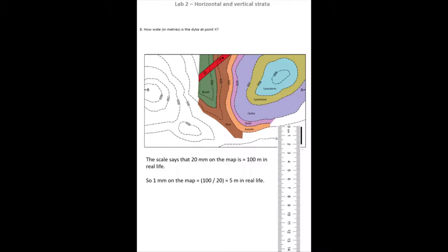Next question is asking how wide the dike is at point X. Well, in order to work that out, we need to work out what the scale of the map is. And in the bottom corner of the map, you can see that we've been given a scale bar. And when we take a ruler to that scale bar, we see that 100 meters represented by the scale bar is equal to 20 millimeters. So 20 millimeters on the map is equal to 100 meters in real life.